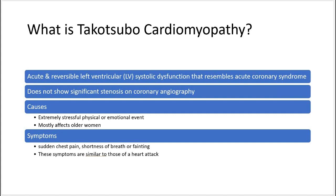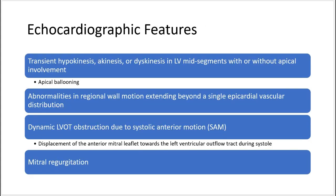Symptoms are sudden chest pain, shortness of breath, or fainting. These symptoms are similar to those of a heart attack. The echocardiographic features include transient hypokinesis, akinesis, or dyskinesis in the LV mid-segment with or without apical involvement.